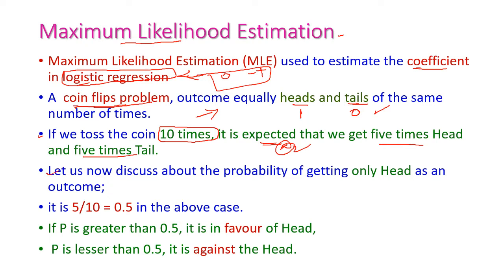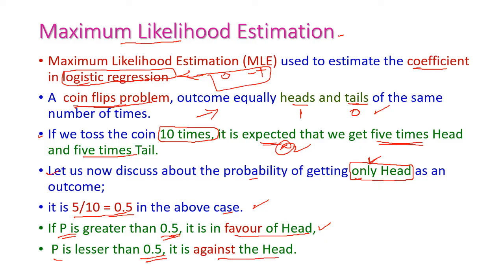What is the probability of getting only head? How many times are we tossing our coin? 10 times. The expected outcome for getting head is 5, so 5 by 10 which is equal to 0.5 as per our average. Suppose if the P value, that is the probability value, is greater than 0.5, then this is in favor of head. Suppose if the probability value is less than 0.5, then this is against head.